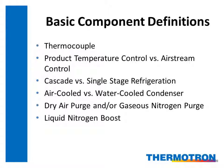Cascade refrigeration systems consist of two compressors that allow the chamber to go to minus 70 degrees Celsius. Single-stage refrigeration consists of one compressor that allows the chamber to typically go to minus 40 degrees Celsius.